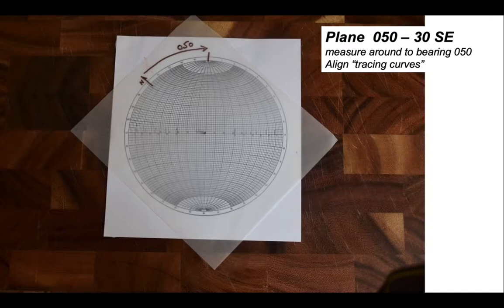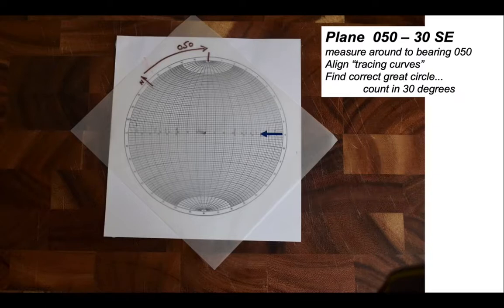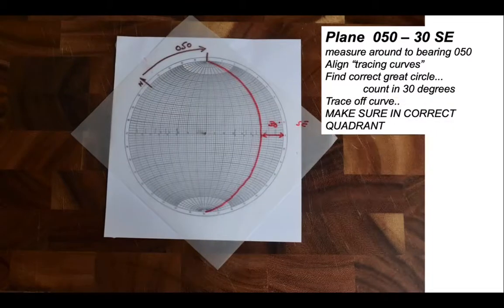One of these curves that's running up and down the view represents the plane. We count in 30 degrees as you can see with that arrow, and trace on the curve. That is the great circle that represents the plane 050 30. We just have to make sure that it's inclined down towards the southeast quadrant, and you can see there it is.